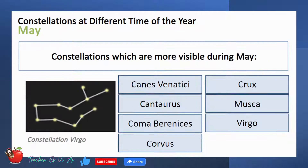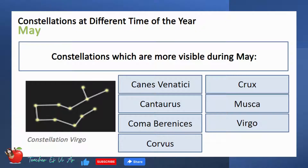Here are the constellations which are more visible during May: Canis Venatici, Crux, Canoris, Musca, Coma Berenices, Virgo, and Corvus.